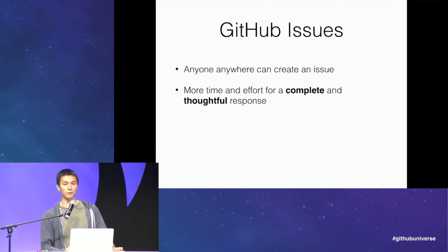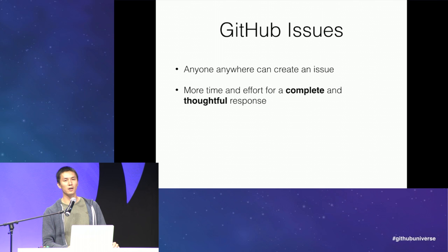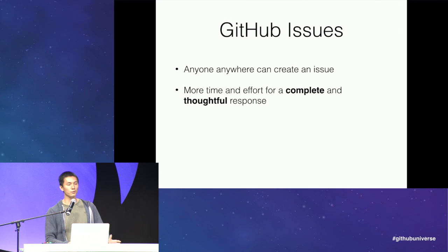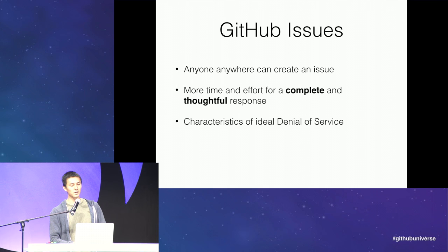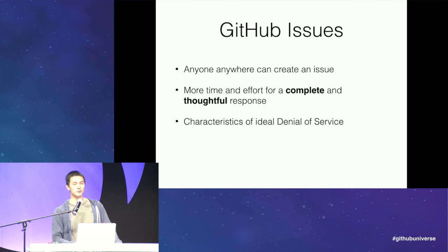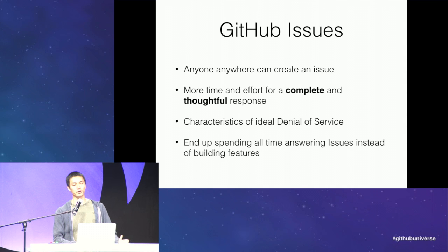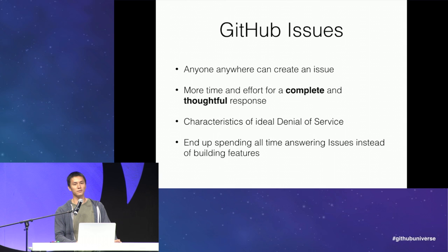But it often takes a lot more time and effort for a complete and thoughtful response from the maintainer. If you are the type of maintainer who wants to be welcoming to beginners or maintain a high quality standard for answers, you have to spend a lot more effort composing a good response. With a networking background, you might recognize these as key characteristics of a denial of service: the distributed and asymmetric resource nature of GitHub issues. I definitely experienced this with my own project, Quill — when it was gaining popularity, I was spending all my time answering questions on GitHub issues instead of building features, which isn't sustainable.